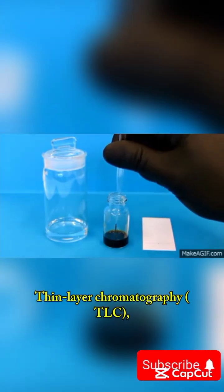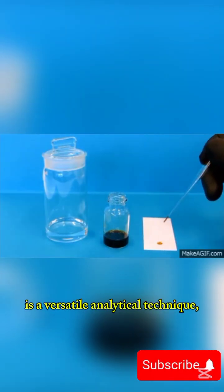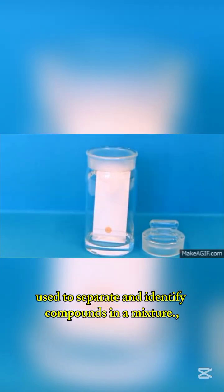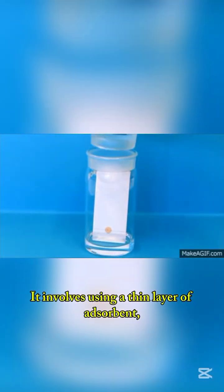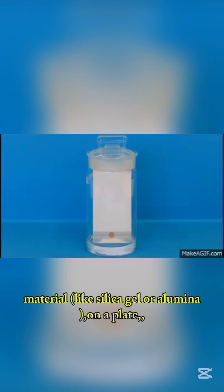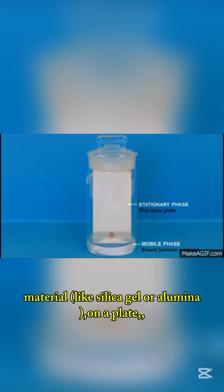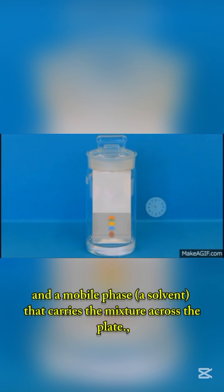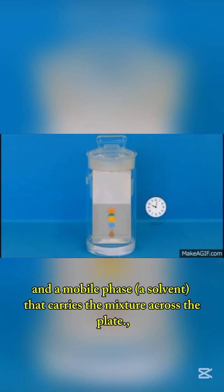Thin layer chromatography, TLC, is a versatile analytical technique used to separate and identify compounds in a mixture. It involves using a thin layer of adsorbent material like silica gel or alumina on a plate, which serves as the stationary phase, and a mobile phase of solvent that carries the mixture across the plate.